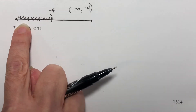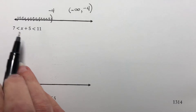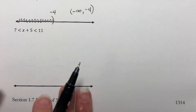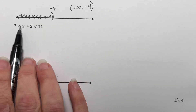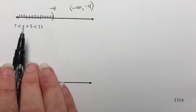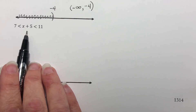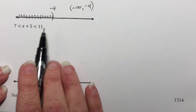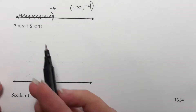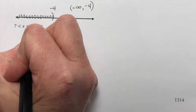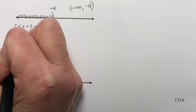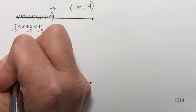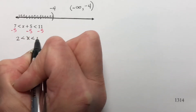For example, 7 is less than 11 — and it could have less than or equal to, and it should still be true. When we have a problem like this, we want to end up with our variable alone in the middle. Whatever you do to one side to get rid of something, you need to do to the other two as well — we really do think of this as a three-sided problem. To get this x alone, I would need to subtract 5, so I do that on all three sides. That gives me 2 is less than x is less than 6.